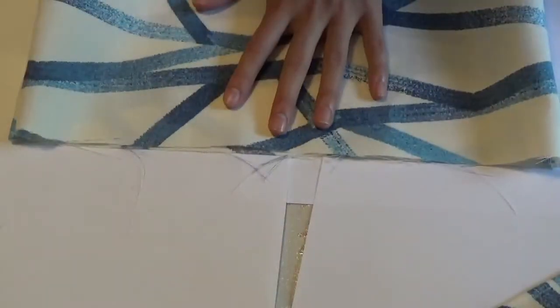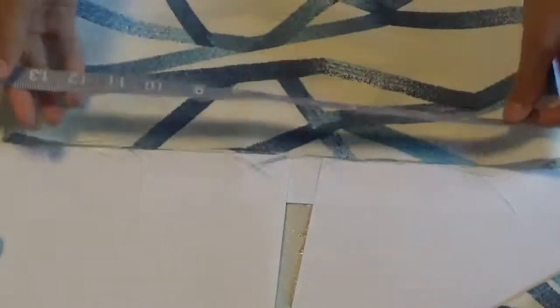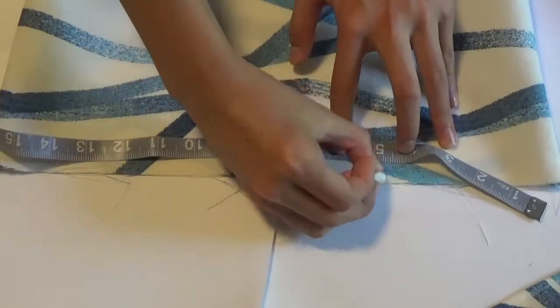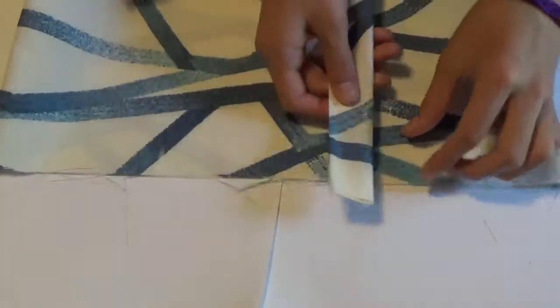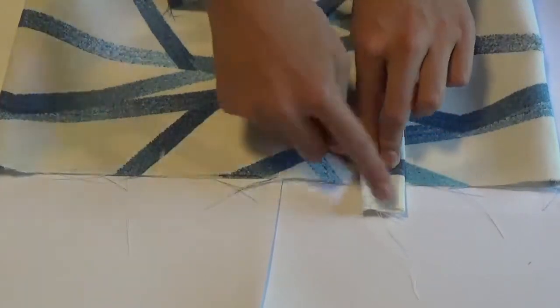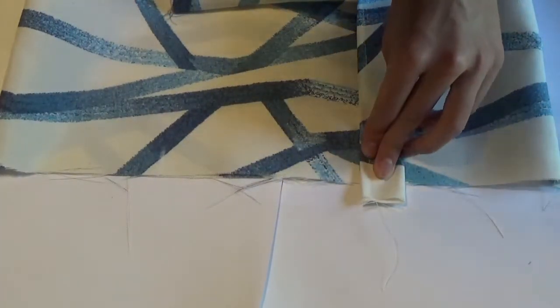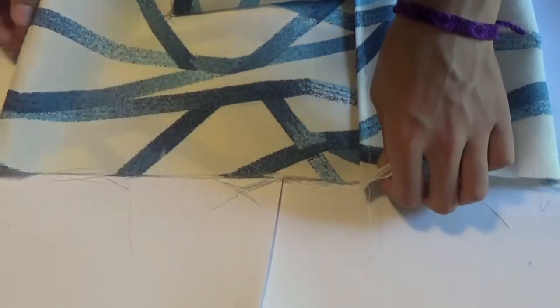Once all the depth things are sewn, flip the outer bag right side out, make sure all the corners are pushed out. Once that's done, figure out where you want your straps to be. I put mine four inches into the bag on each side. After you mark the place you want your straps to be, pin the straps there and make sure about a half inch is sticking up above the opening of the bag. Obviously, once you're done with the first side, flip the bag over and pin the straps in the same place but on the new side.